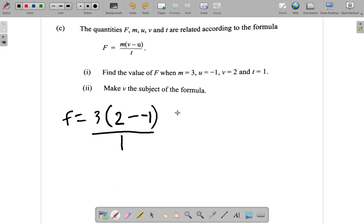Okay, good. So it's 3 times 2 minus negative 1, becomes 2 plus 1, over 1, equals 3 times 3. That gives you 9.